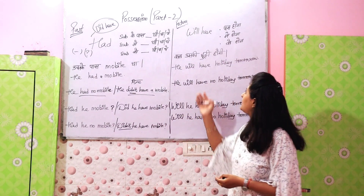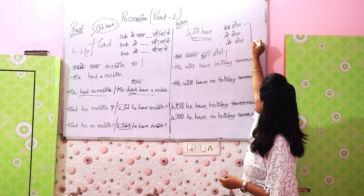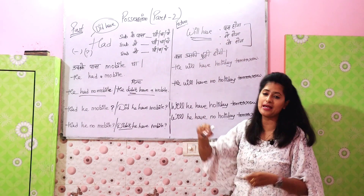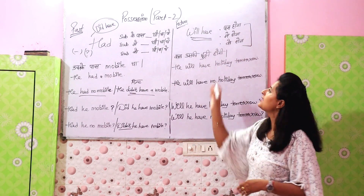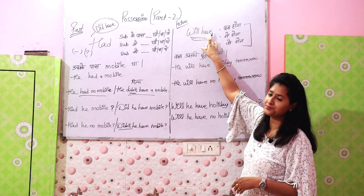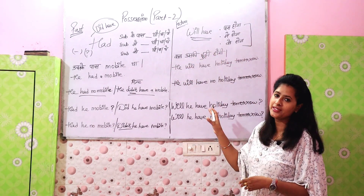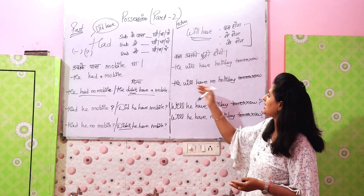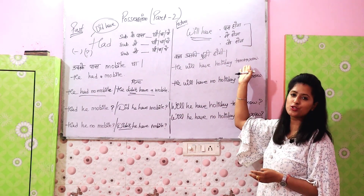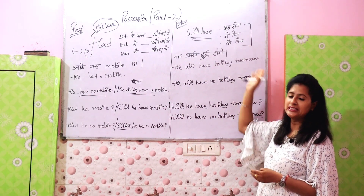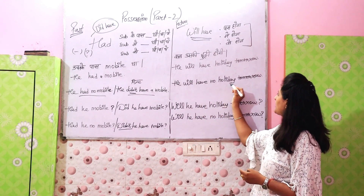Now coming to the future tense. Future mein agar hum baat karte hain koi bhi cheez subject ke paas hogi, mein hogi, ya ko hogi, we will use 'will have.' For example: kal uski chutti hogi — we will say 'He will have a holiday tomorrow.' And for the negative: nahi hogi — 'He will have no holiday tomorrow.'